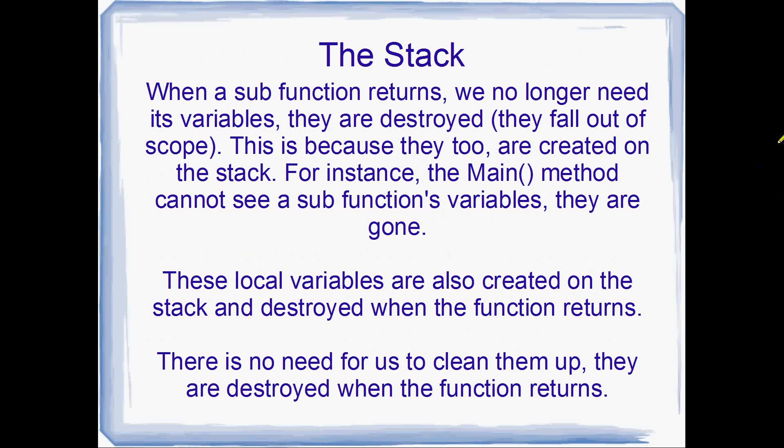When a sub-function returns, we no longer need its local variables, so they're destroyed — or they fall out of scope. They fall out of scope because they're also created on the stack. For instance, the main method can't see a sub-function's variables, and vice-versa. The local variables are created and destroyed on the stack when the function returns. So this means, quite happily for us as programmers, that we don't have to clean them up — they're not going to consume more and more memory, unlike the heap, which we'll look at later.